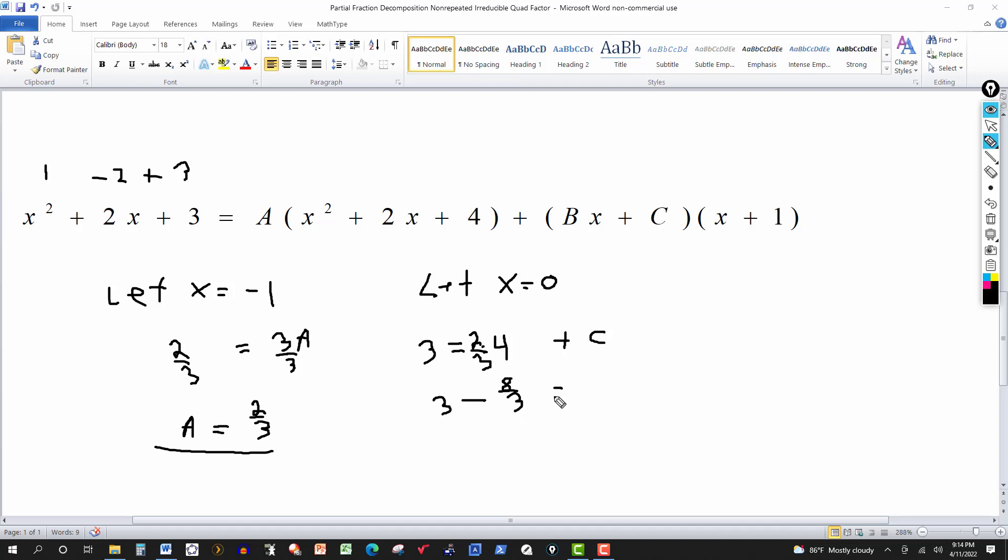I got 3 minus 8 over 3 is equal to C. Get your common denominator here. Multiply by 3 and 3. That would give me 9. 3 is the same thing as 9 over 3. So 9 over 3 minus 8 over 3 gives me 8. Or gives me 1. I should say over 3. 9 minus. So 9 thirds minus 8 thirds. So I get C is 1 third.